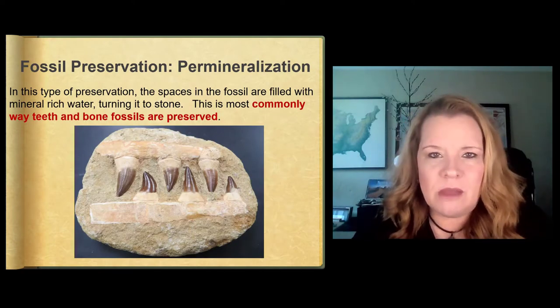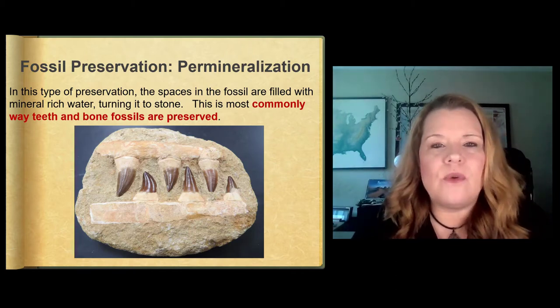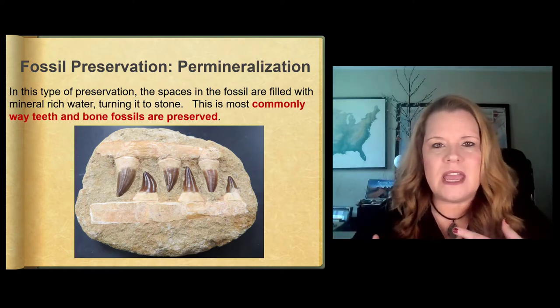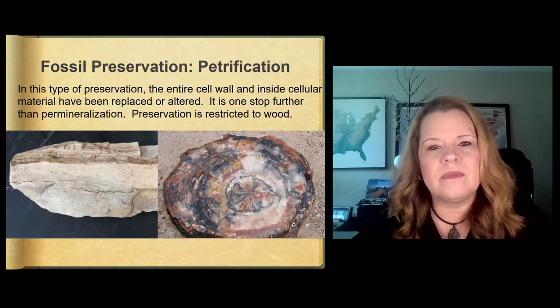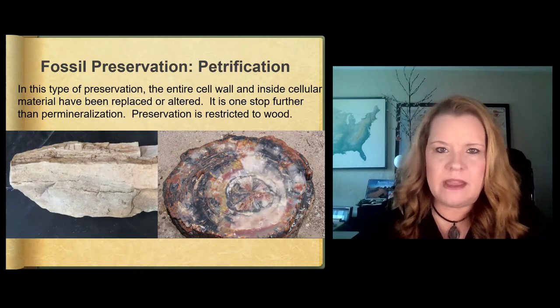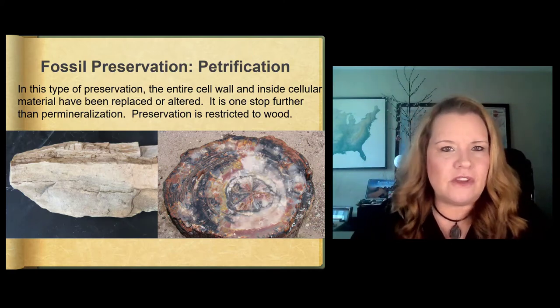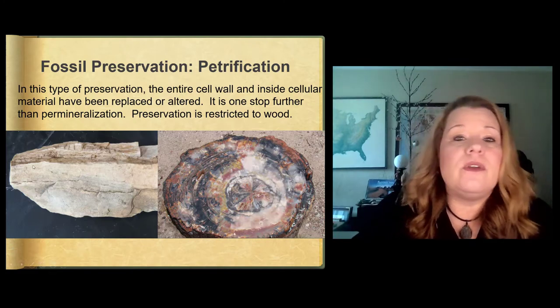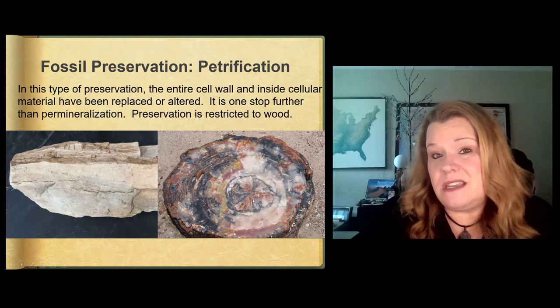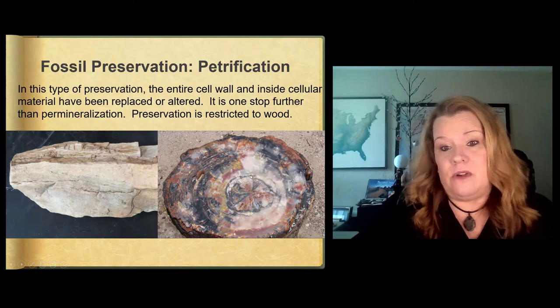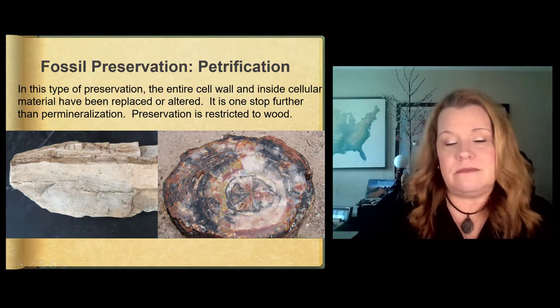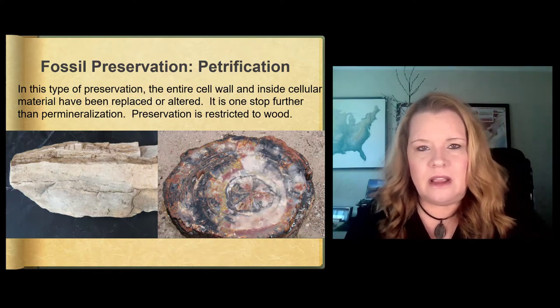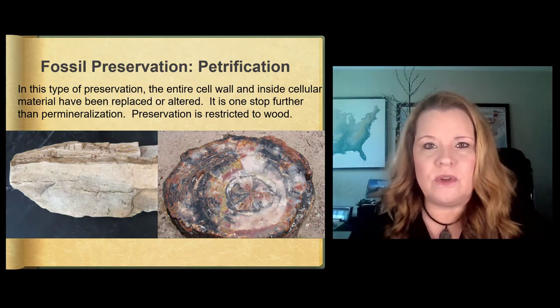Permineralization is a very common way, especially for teeth and bones, for bile and chordata to get preserved. And basically it takes the pore spaces that are in the fossil and transforms them into rock. Petrification occurs in plants. And essentially this is where you have the cellular wall and internal cellular material replaced. And they can come in certain degrees of changes. And like this is actually petrified wood. And so is this. You're like, well, I think that's better. And of course it's prettier and it's worth more money. But this is the same thing. It's petrified wood. It's just the amount of minerals in the groundwater.